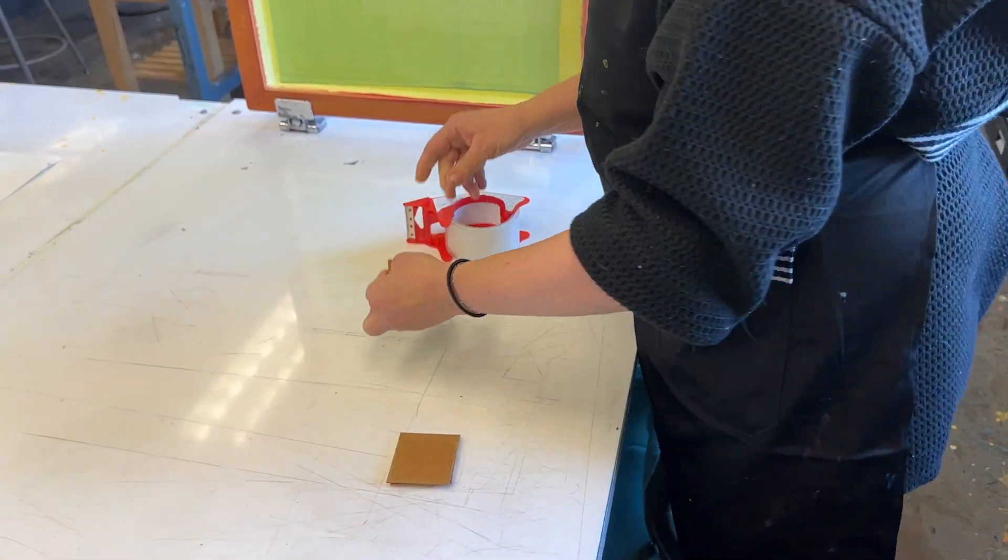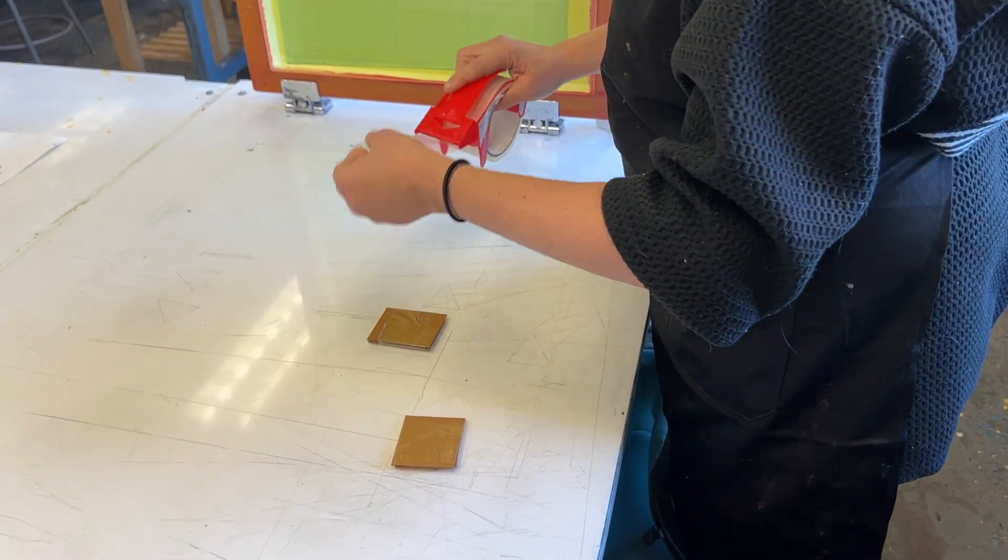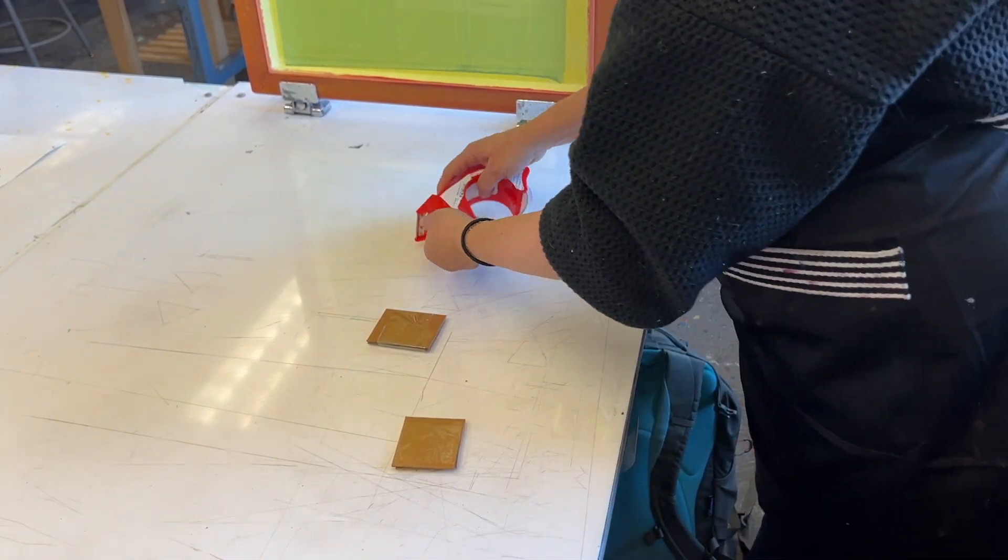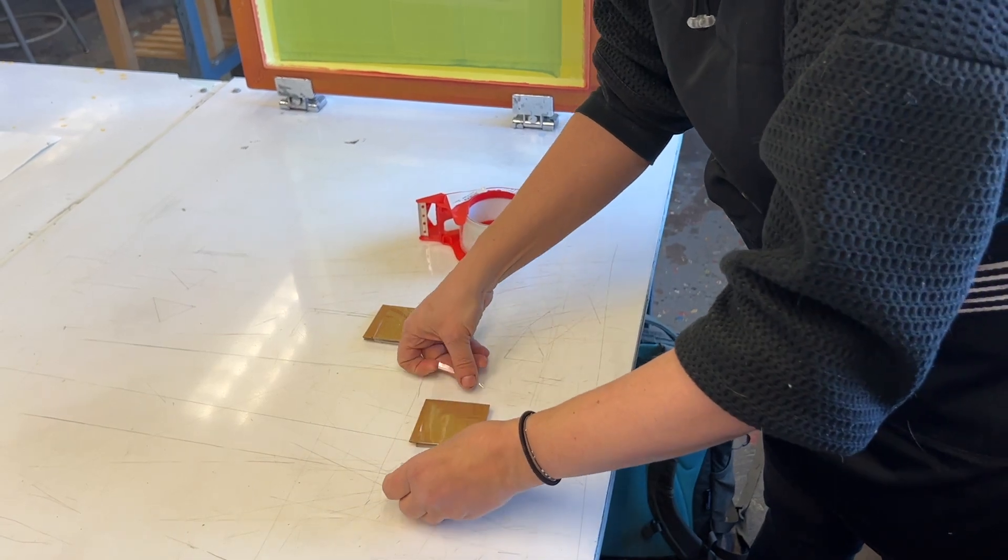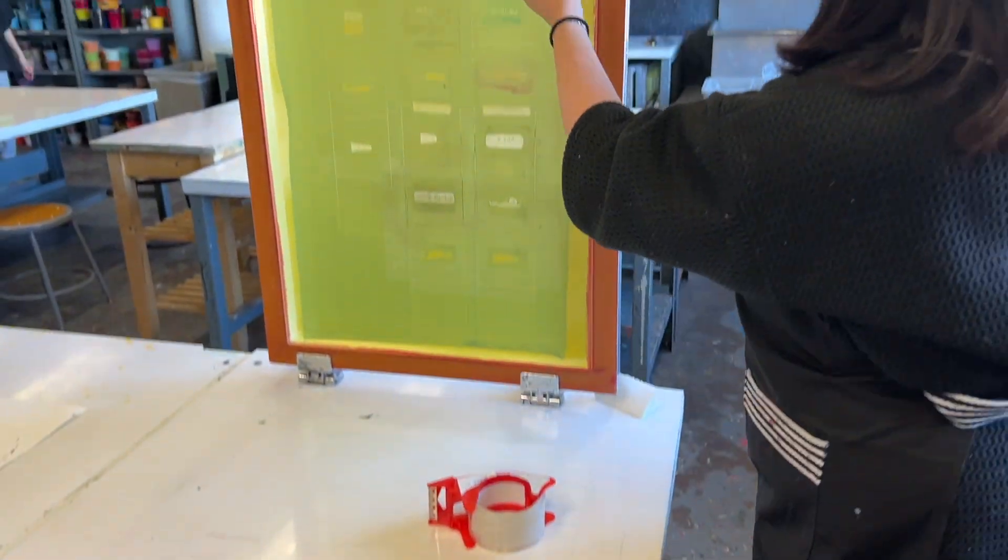So once you've actually taped or put all the tape together and made sure that they're secure and they won't move, I take two more pieces of tape. This is so that I can put it onto the back side of the screen.